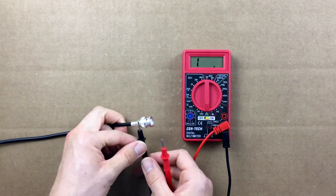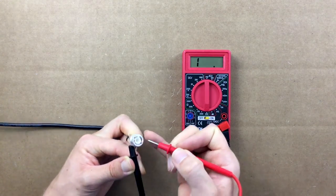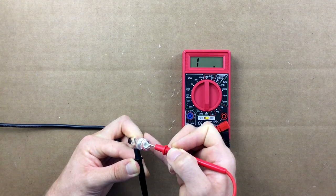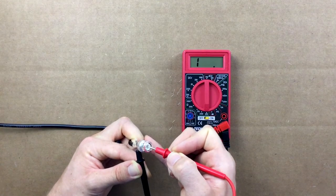Touch one lead to the body and one lead to the center pin of the connector. My meter is reading that there is infinite resistance, so my installation is in perfect working order.